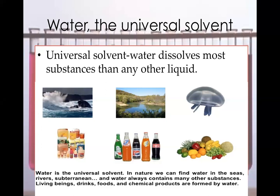Fish can live in water because it dissolves a small amount of oxygen gas. Water plants use carbon dioxide dissolved in water to make their food through the process of photosynthesis. In the home, we use water to dissolve sugar, salts, and spices in our cooking. We also use it to make drinks such as coffee, cocoa, and tea. When washing, we use water as a solvent because it dissolves many kinds of dirt and stains. Water can also dissolve detergents, and a solution of detergent and water can remove dirt and stains that water alone cannot remove.